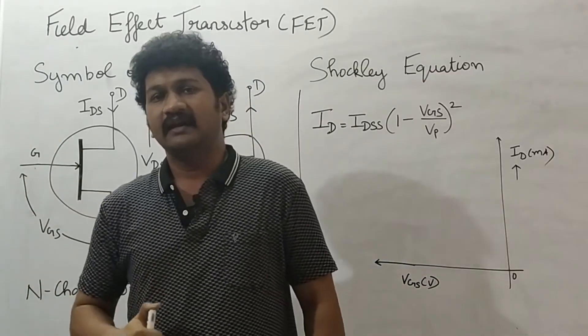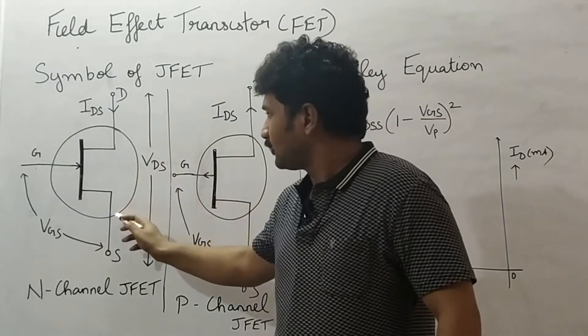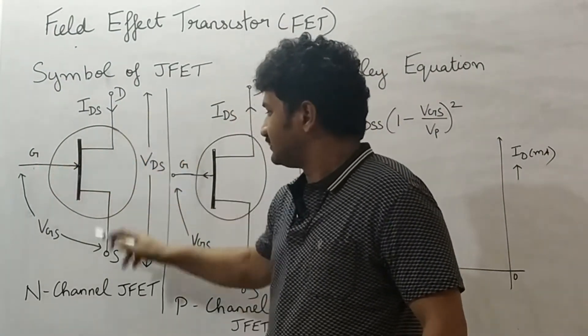The circuitry symbol for N channel and P channel JFET, we will see here. If you see three terminals: gate, drain, and source.